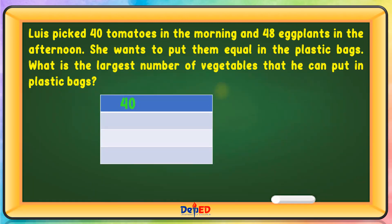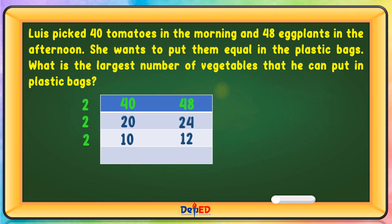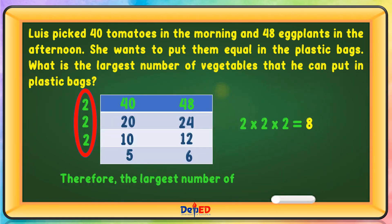40 and 48 are divisible by 2. 40 divided by 2 equals 20; 48 divided by 2 equals 24. 20 and 24 are divisible by 2: 20 divided by 2 equals 10; 24 divided by 2 equals 12. 10 and 12 are divisible by 2: 10 divided by 2 equals 5; 12 divided by 2 equals 6. Our prime factors are 2 times 2 times 2, which equals 8. Therefore, the largest number of vegetables per bag is 8.